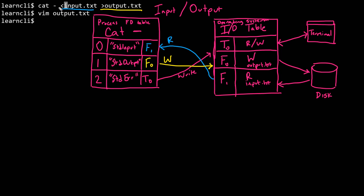Can we combine input redirection and output redirection? Running cat with input redirection from input.txt and output redirection to output.txt — notice we didn't wait for any entry and saw no output. But opening output.txt in Vim, we see we effectively copied input.txt to output.txt. The shell set up the file descriptor table such that standard input reads from F1 connected to input.txt, and standard output writes to F0 connected to output.txt — rewiring these streams from outside the program based on commands at the bash shell prompt.